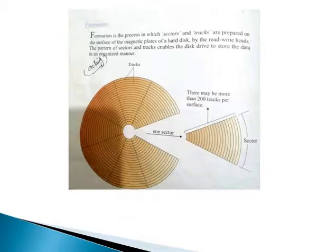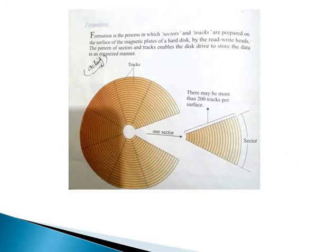Formation is the process in which sectors and tracks are prepared on the surface of the magnetic plates of a hard disk. Like this.